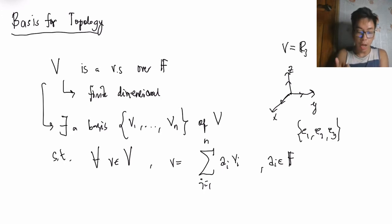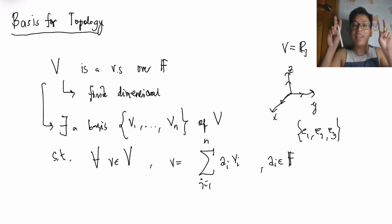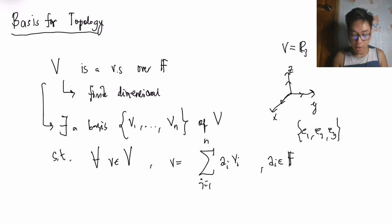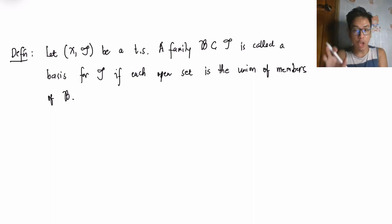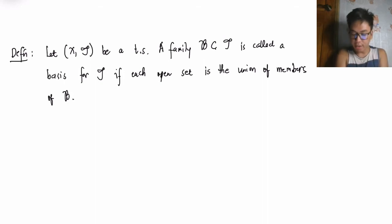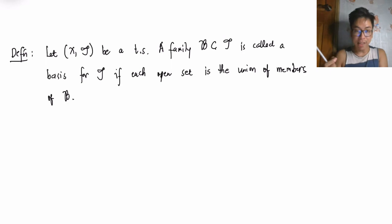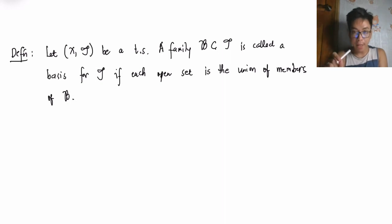When we talk about the basis for a topology, it somehow generates the topology. The formal definition: given a topological space tau over a set X, a family script B which is a subset of tau is called a basis for tau if each open set is the union of members of B.